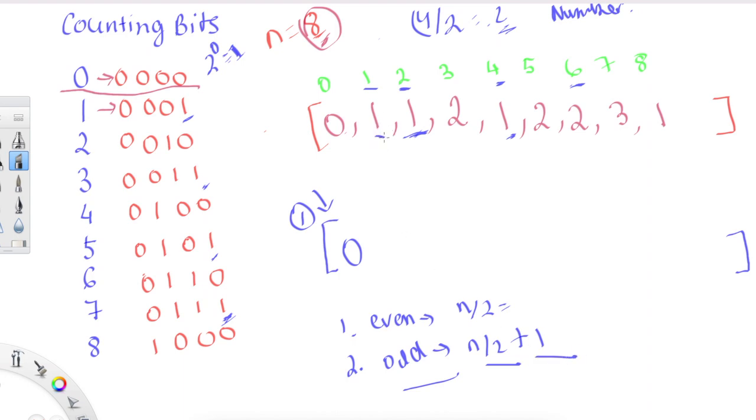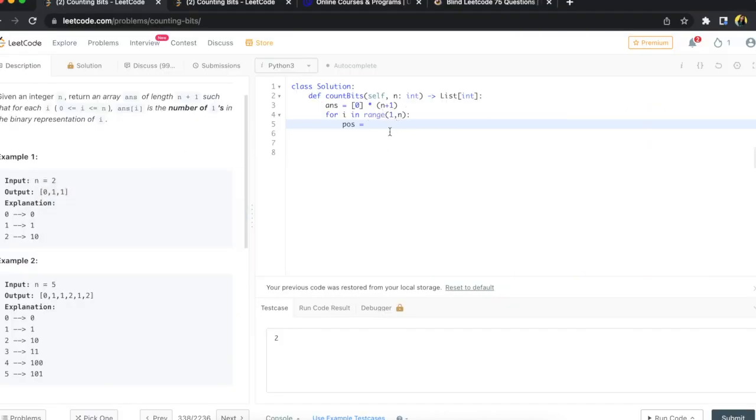Odd is n divided by 2 plus 1, so we're going to add a 1 to that. That's how we're getting this one. I hope that is clear how we're getting this position.